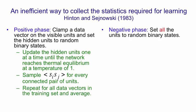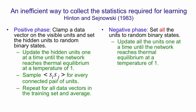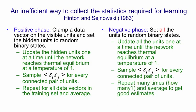Then in the negative phase, you don't clamp anything. The network is free from external interference. So you set all of the units, both visible and hidden, to random binary states. And then you update the units one at a time until the network reaches thermal equilibrium at a temperature of one, just like you did in the positive phase. And again, you sample the correlation of every pair of units i and j. And you repeat that many times. Now it's very difficult to know how many times you need to repeat it.